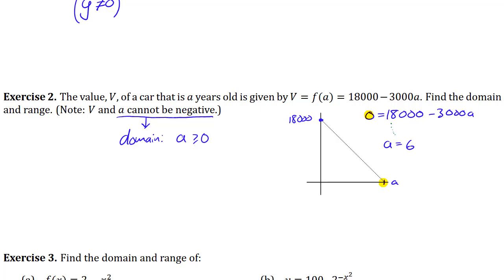And so that means after year six the value becomes zero. So you also have to have a is less than or equal to 6. So the domain really I would write as a is in between 6 and 0 this way.